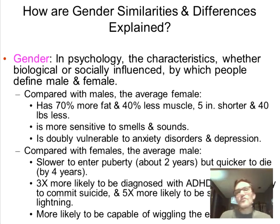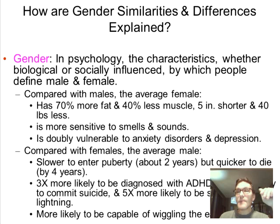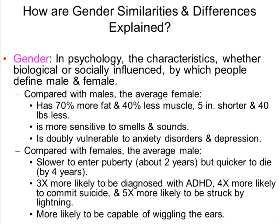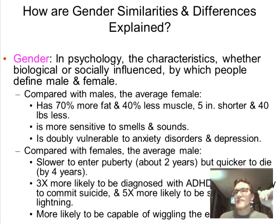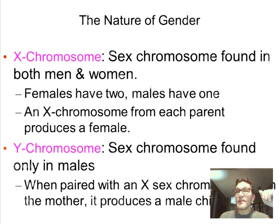Females on average are more sensitive to smells and sounds, and more vulnerable to anxiety and depression. Males on average are slower to enter puberty by about two full years, sooner to die by about four full years, three times more likely to be diagnosed with ADHD, and more likely to be able to wiggle their ears. So there is some biological truth to gender to begin with.